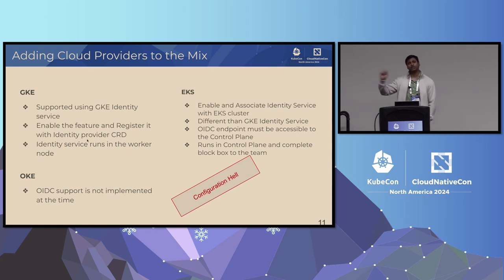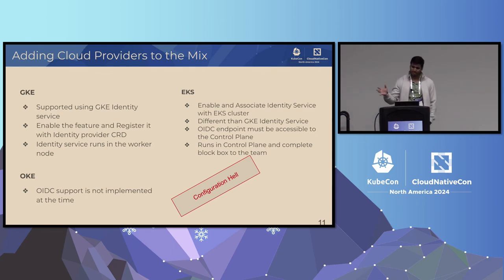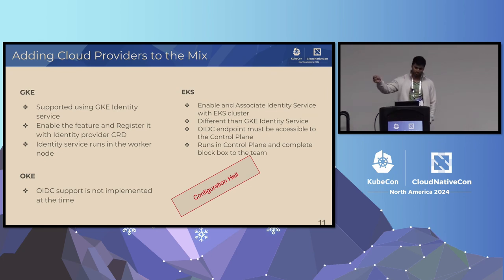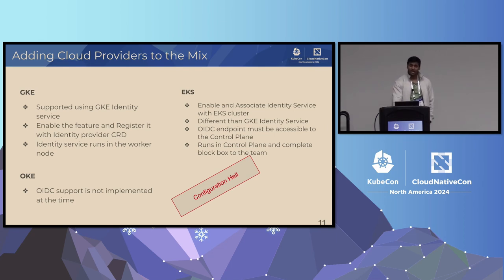But when you want to do the same thing with EKS, EKS also has their own identity service, but it's different from GKE. The key difference we found is their identity service runs in the control plane, which means your OIDC endpoint must be accessible from the control plane, and you don't have access to the logs. It's more like a black box in EKS. And OKE — last year when we were researching this — OKE did not even support any OIDC at all.